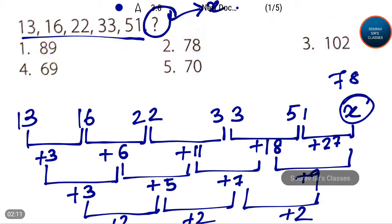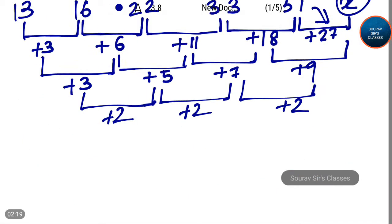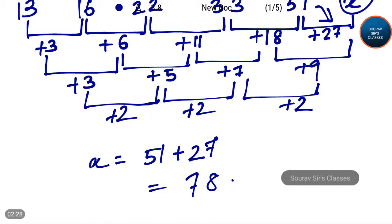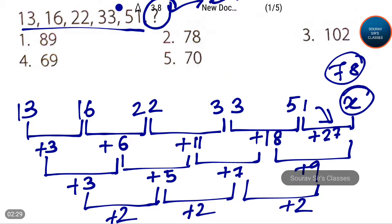So the missing term must be 78, because 51 plus 27 equals 78. So x is equal to 51 plus 27, that is equal to 78. This missing term is equal to 78, which is option 2. So option 2 is the correct answer.